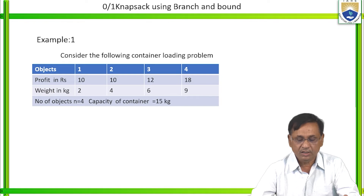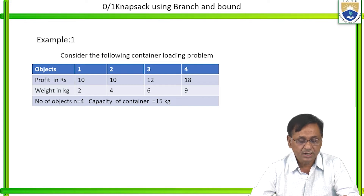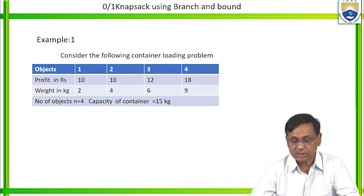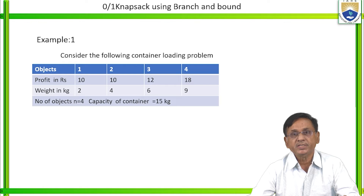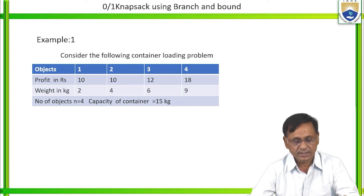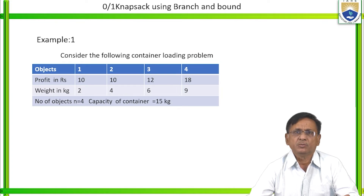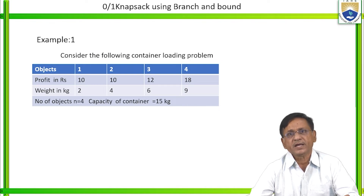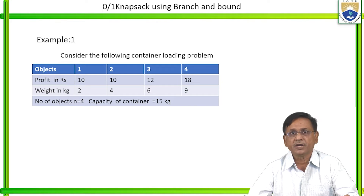Consider the following container loading problem: there are 4 objects. The profits are 10, 10, 12, and 18 rupees for objects 1 through 4. The weights are 2 kg, 4 kg, 6 kg, and 9 kg respectively, and the capacity of the container is 15 kg. Since this is a maximization problem but branch and bound is generally used for minimization, we convert it by multiplying all profits by negative sign, giving: -10, -10, -12, -18.